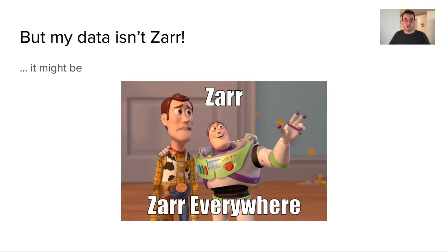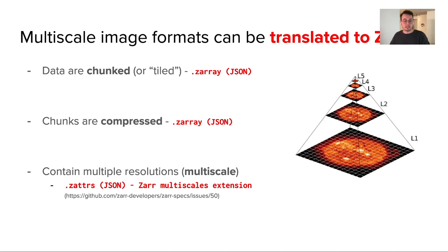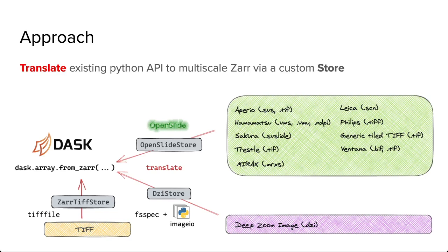Multi-scale image formats share a lot of similar concepts, and ultimately we can translate those different concepts into the Zarr data model. The idea is to perform this translation to Zarr within a custom store, and the store object allows us to wrap an existing Python API and then expose an interface that both Dask and Zarr understand.